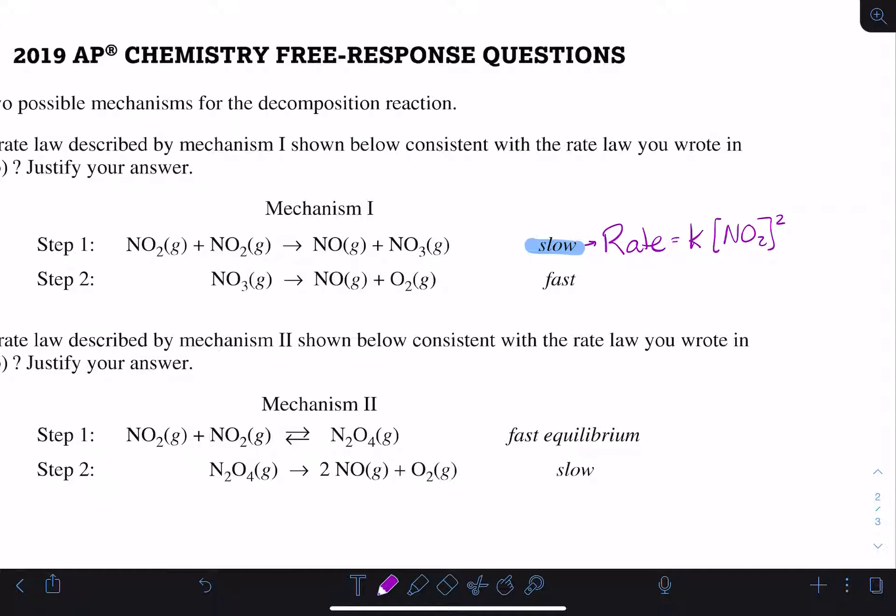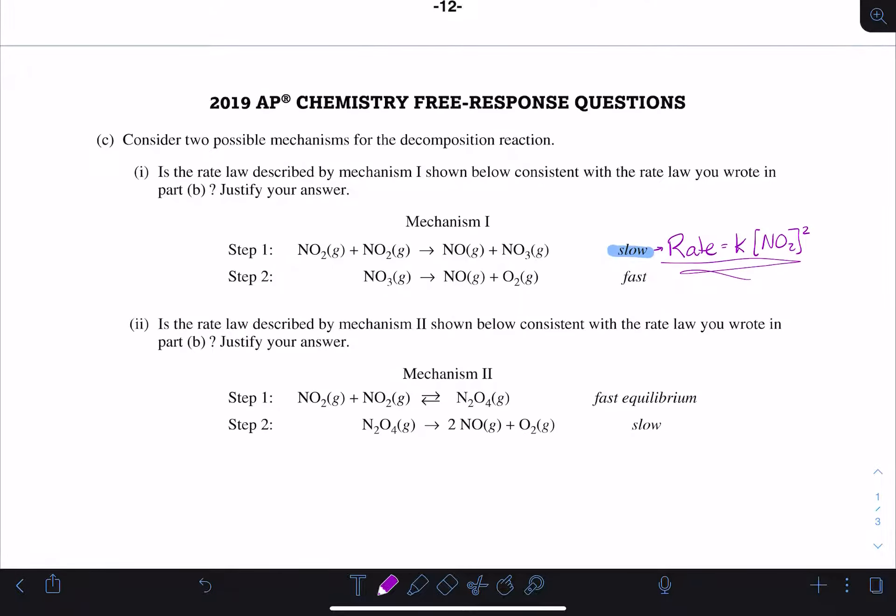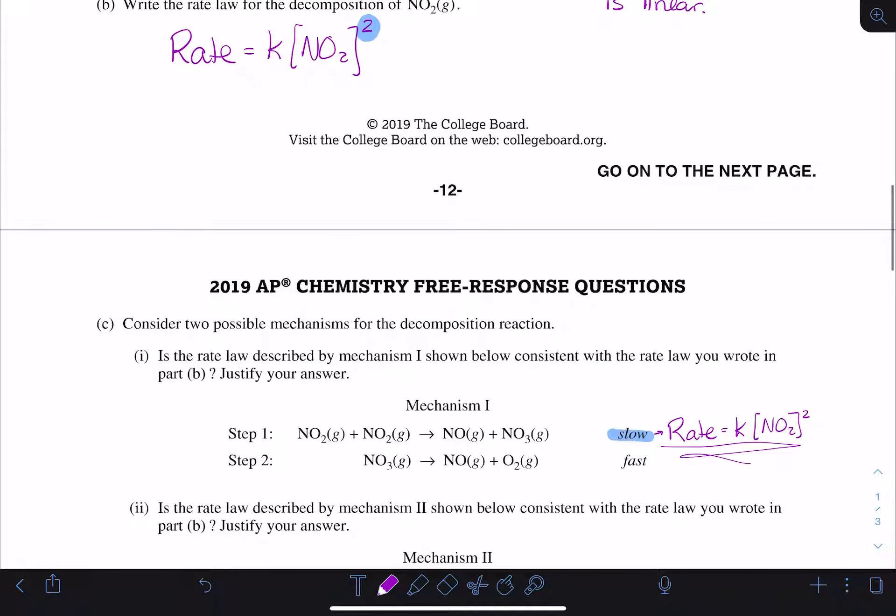Since step 1 is our slow step, we can write the rate law for step 1. We don't need to do anything else here. There are no intermediates in the rate law as we have it written, so we don't need to replace anything. This is the rate law for the overall reaction.